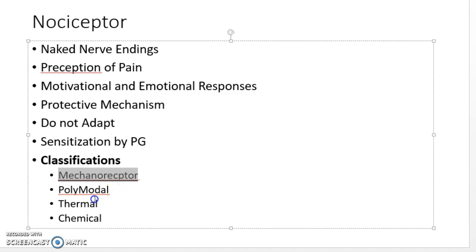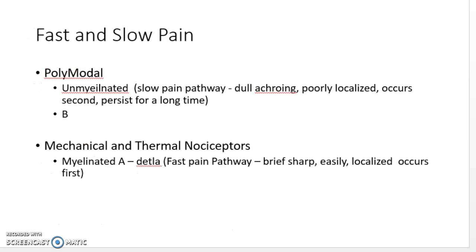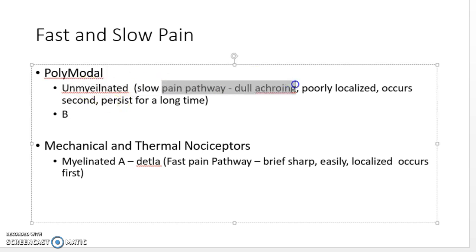The main classifications of nociceptors are mechanoreceptor, chemical, thermal, and polymodal. Nociceptors do not adapt; they are naked free nerve endings with protective mechanism, motivational and emotional responses, and perception of pain. Fast and slow pain depends on myelinated nerve fibers — A-delta for fast, sharp, acute, or electrical pain, and C fibers for more chronic, aching, poorly localized pain that occurs over a longer period.